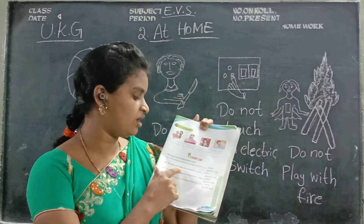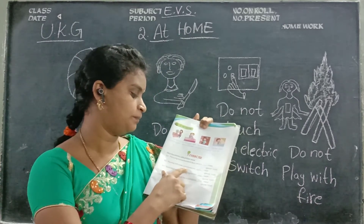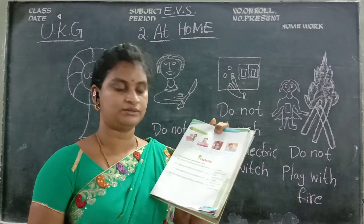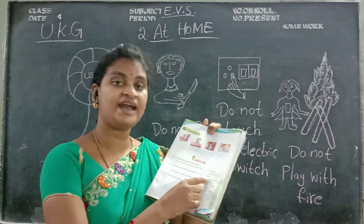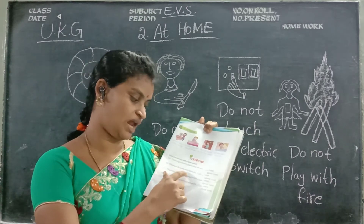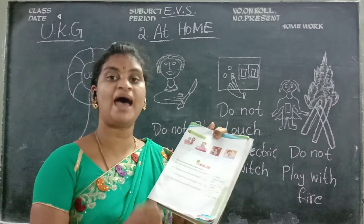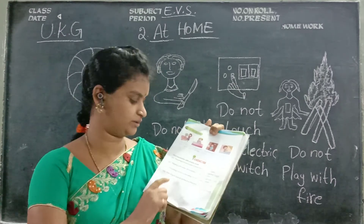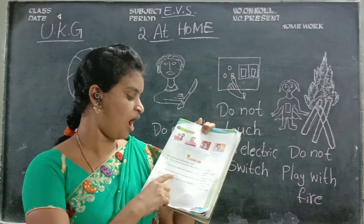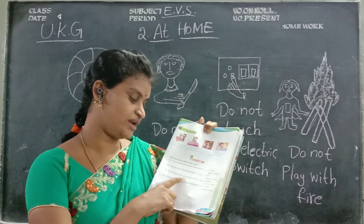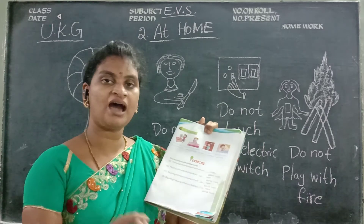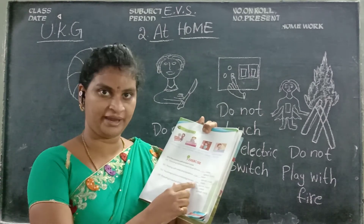B1: playing with knife and blade is a bad habit. Next, C: touching iron or moving fan is a bad habit.